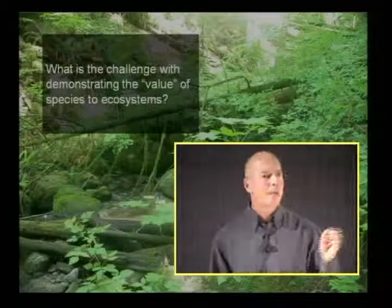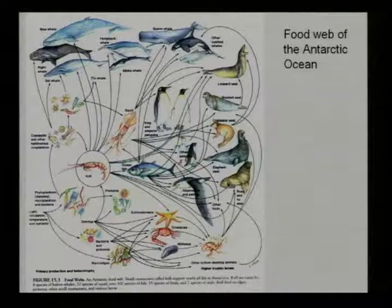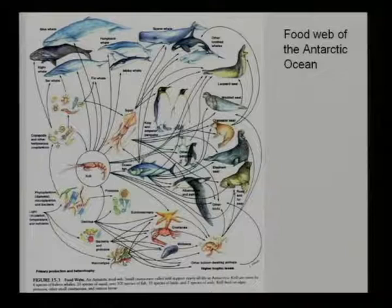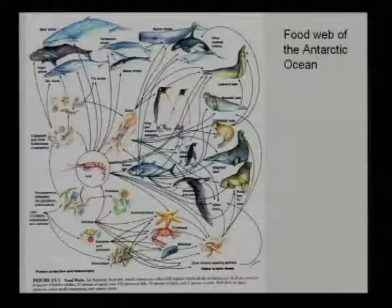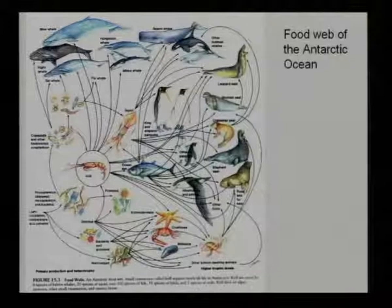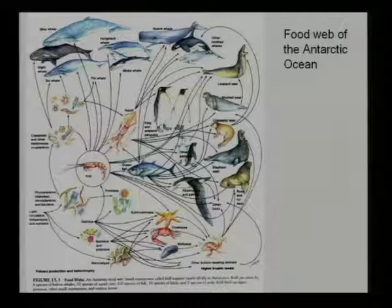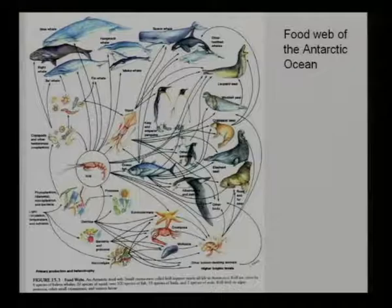Here's a food web for the Antarctic. In the Antarctic Ocean, very many of the large species depend on krill, a small shrimp-like crustacean. One could ask what would happen if one species disappeared — the blue whale, for example, which has been hunted nearly to extinction. If the blue whale didn't exist at all, would we really be able to measure increases in other species as a result? The answer is probably not. It's very difficult to measure small changes in ecosystems with so many different connections.